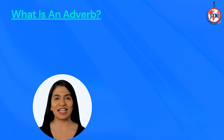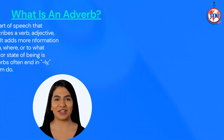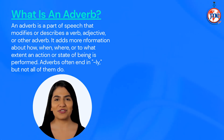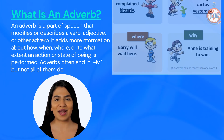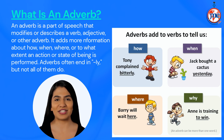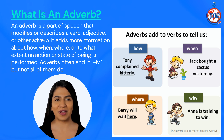What is an adverb? An adverb is a part of speech that modifies or describes a verb, adjective, or other adverb. It adds more information about how, when, where, or to what extent an action or state of being is performed.